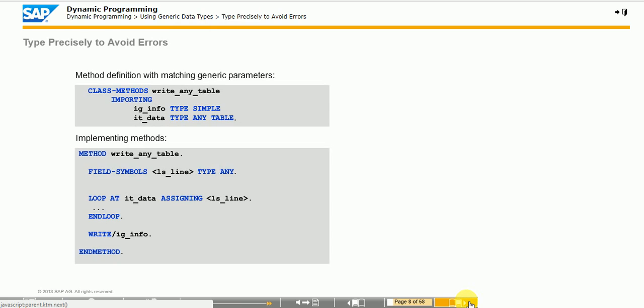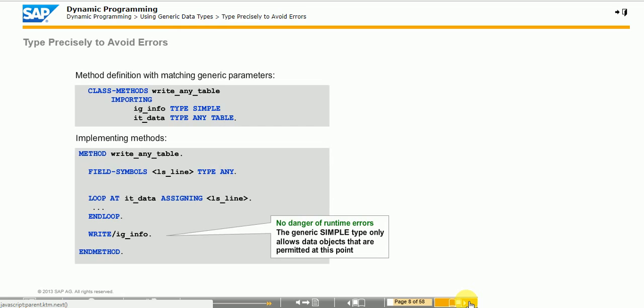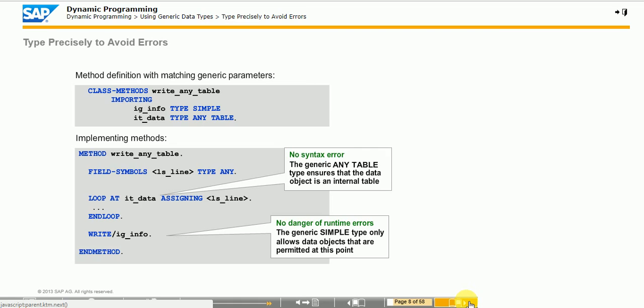If you use the generic type SIMPLE, the statement does not cause runtime errors. You can convert all data types that are compatible with SIMPLE to a character string. The syntax errors are corrected because parameter IT_DATA now accepts only internal tables because of its type ANY TABLE. Note: a runtime error can still occur if the method contains an index access to IT_DATA, specifically if the actual parameter is a hashed table. Use the generic type INDEX TABLE to restrict the formal parameter even further.